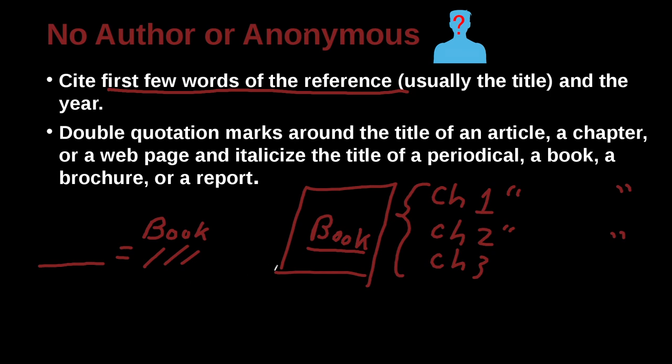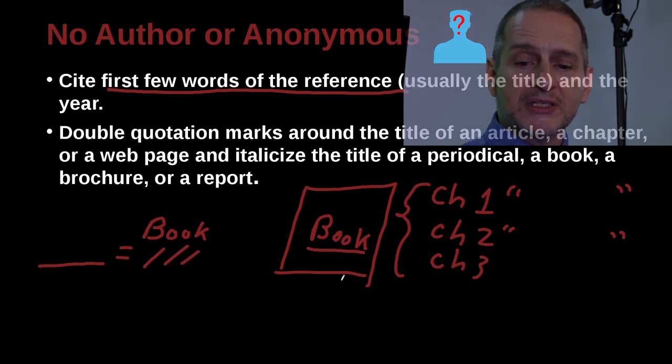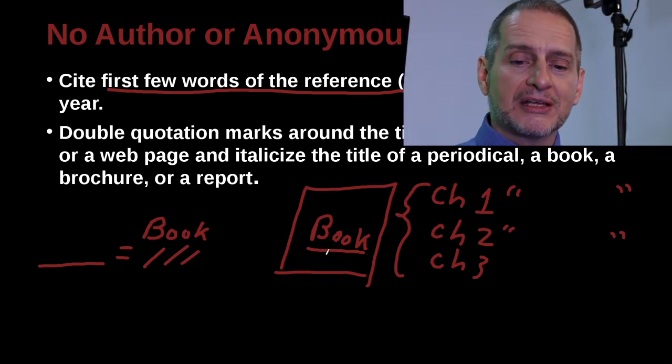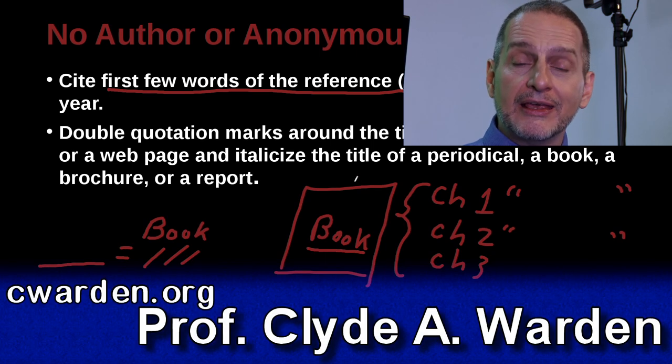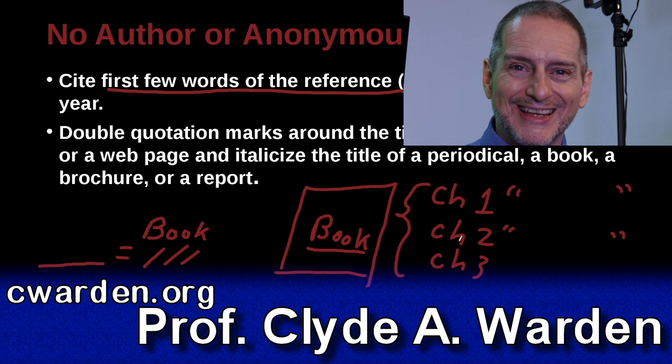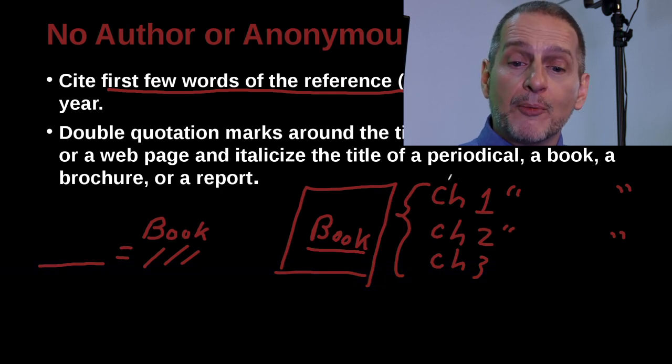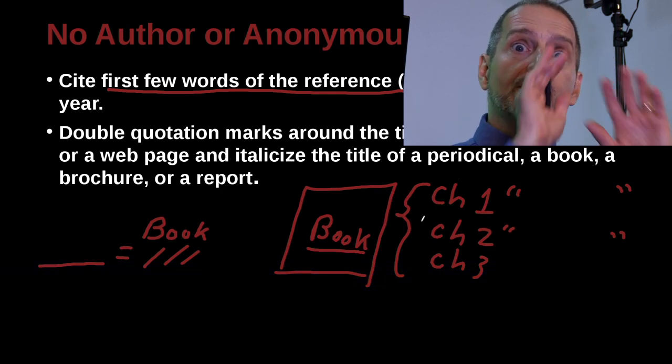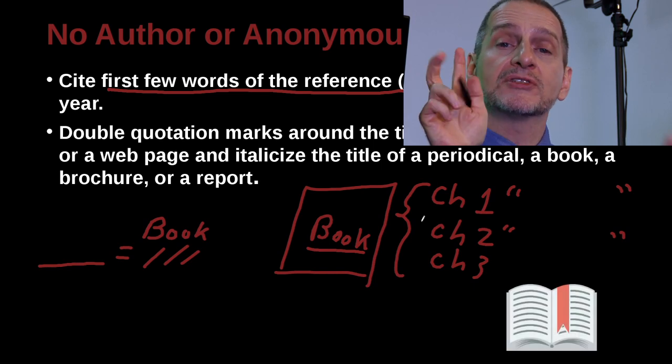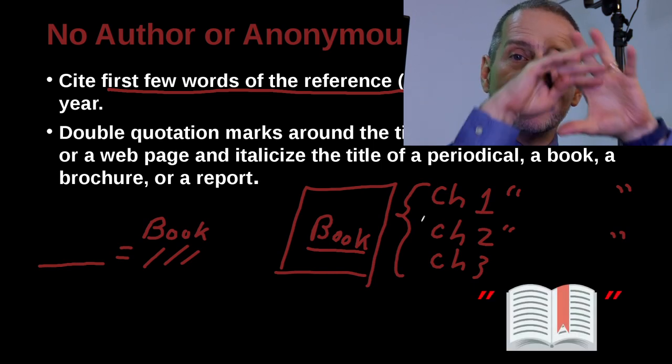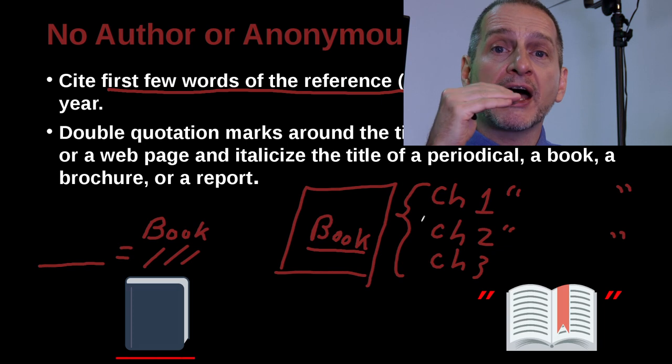We can remember this rule quite simply by always taking into account: are you citing the big thing or the small thing? Are you citing part of something or the whole? If it's part of something, it goes inside quotation marks. If it's the whole thing, then it's underlined.